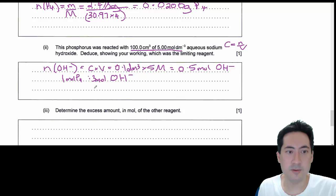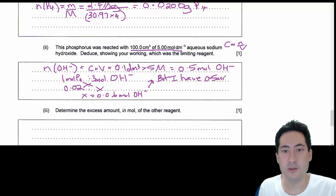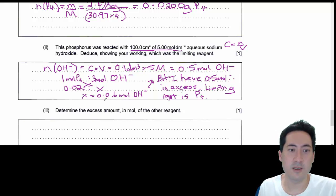I'll just write that in there. So 1 mole of P4 is to 3 moles of OH minus. The numbers work out easier if I do this one. If I've got 0.02 moles, I do a cross multiplication, and so x equals 0.06 moles of OH minus. But I have 0.5 moles, therefore in excess. The limiting reagent is P4, because I have heaps of sodium hydroxide and I only need 0.06.